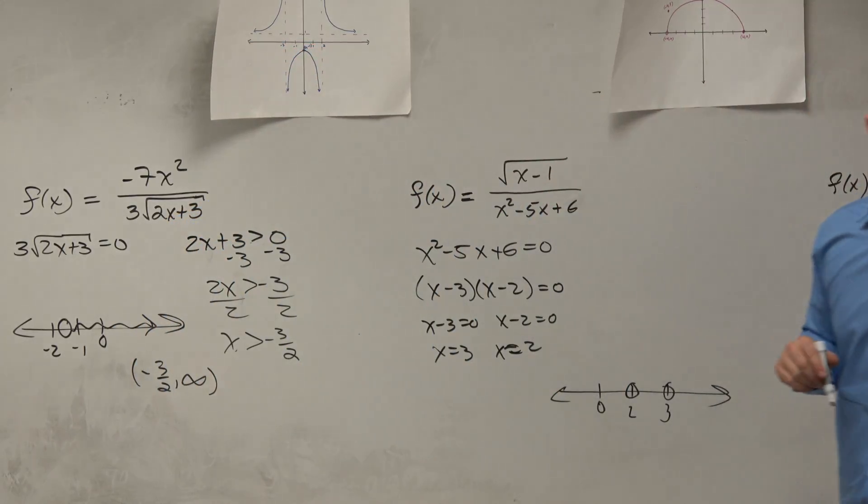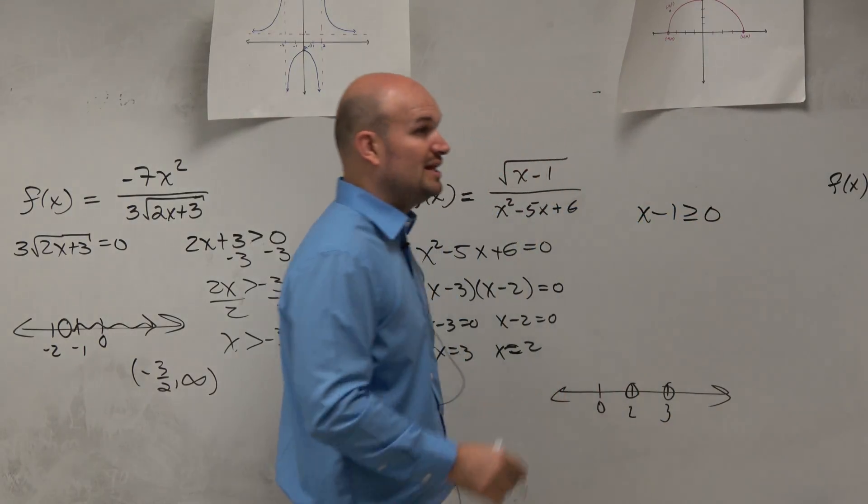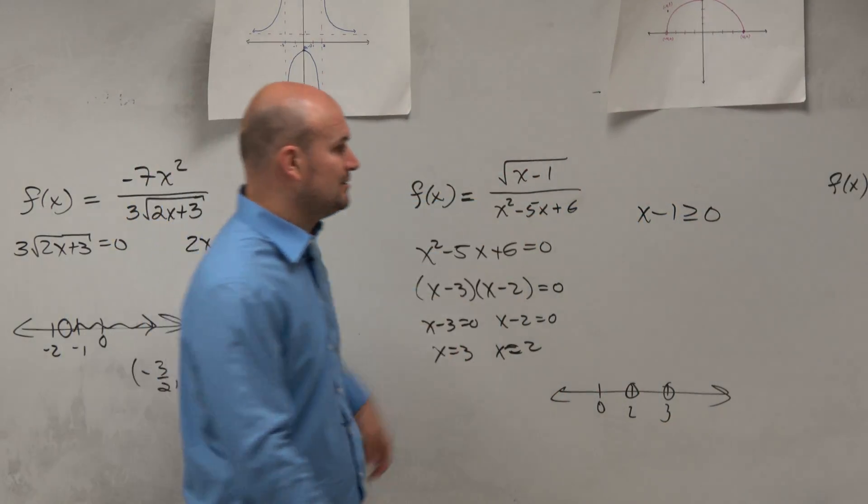Then I have this. So I still have to count it. You can't just say I'm just going to worry about the denominator. So therefore when you have a radical, set it greater than or equal to 0. It's in the numerator, so you can do equal to.